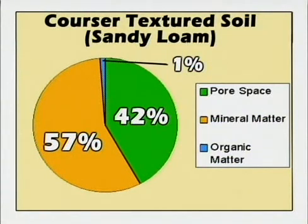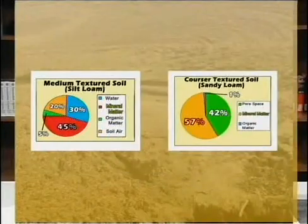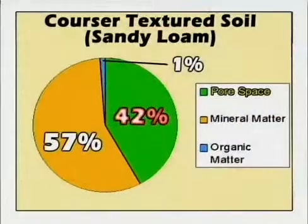This may be contradictory to what you would have believed, since we think of coarse soils as very porous with very large pores — and that is indeed true. But here we're not focusing on individual pore size; we're looking at the total volume of pores within a given volume of soil. Comparing these two soils at field capacity, the sandy loam with 57% mineral matter versus 45% in the silt loam would be much heavier. Coarse soils, as we increase particle size, actually yield heavier soils — those that weigh more per unit volume. At field capacity, we're holding a much lower volume of soil water because large pore spaces do not retain water to nearly as high a percentage of their total pore volume as do the smaller pores found in silt loam.